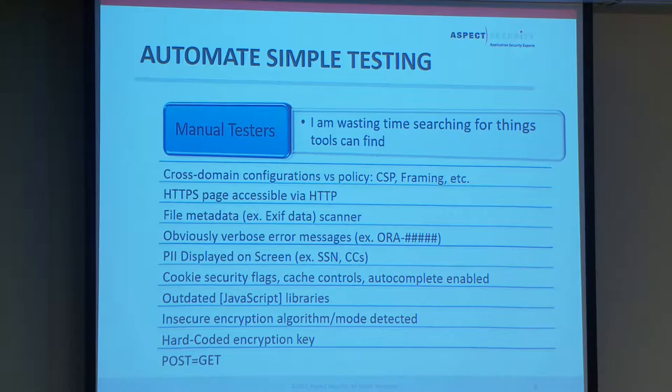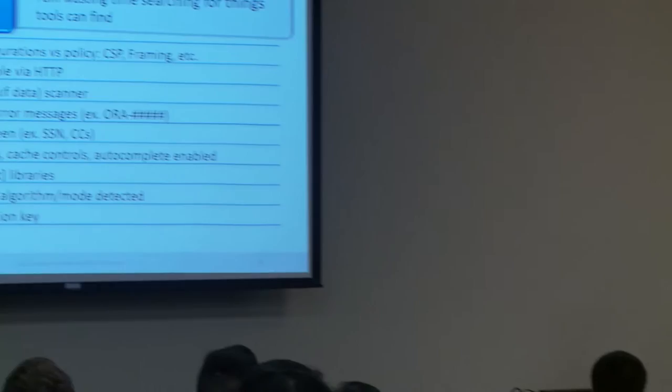If you have a cross-domain policy, your application should not be framed by evil.com — you should have a rule in Burp, ZAP, or whatever DAST tool you're using that will automatically find that. Is the page accessible over HTTP when it should only be HTTPS? Your tools should automatically send a request to every HTTP page when looking for an HTTPS page. Verbose error handling — if you see 'ORA-' followed by numbers, that's almost certainly an Oracle error, and your proxy tools can detect that in AJAX responses.